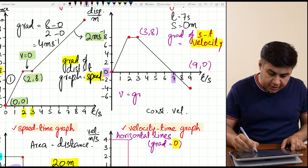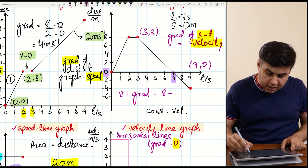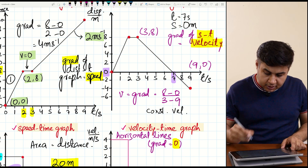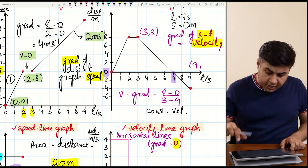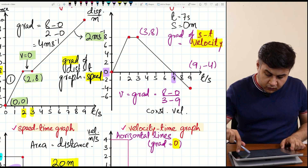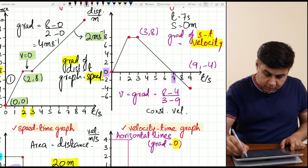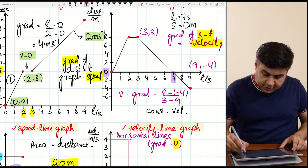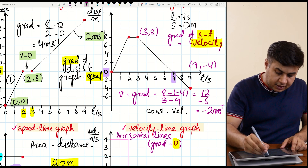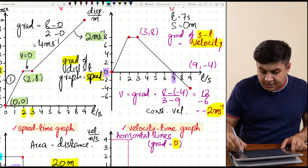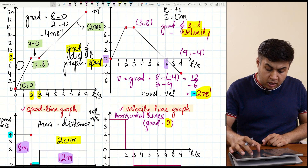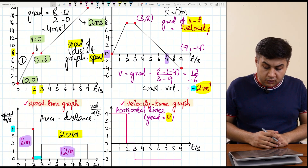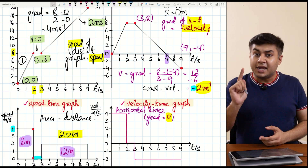To find velocity from the displacement-time graph, we calculate the gradient. Taking coordinates, y2 minus y1 divided by x2 minus x1, using the last segment: from t equals 3 to t equals 9, displacement goes from 8 to minus 4. That gives minus 4 minus 8 divided by 9 minus 3, which is minus 12 divided by 6, equal to minus 2 meters per second. The minus sign means the object is travelling towards the left. The area under the displacement-time graph gives no useful quantity — only the gradient gives you velocity.